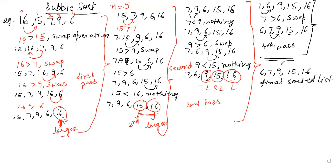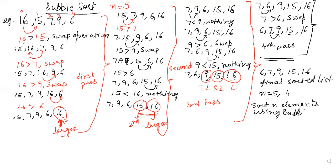If you analyze carefully, the number of elements in this array was 5 and the number of passes required was 4. To generalize: to sort n elements using bubble sort, we need at least n minus 1 passes. For example, if the number of elements in the given array is 10, the number of passes required will be 9.